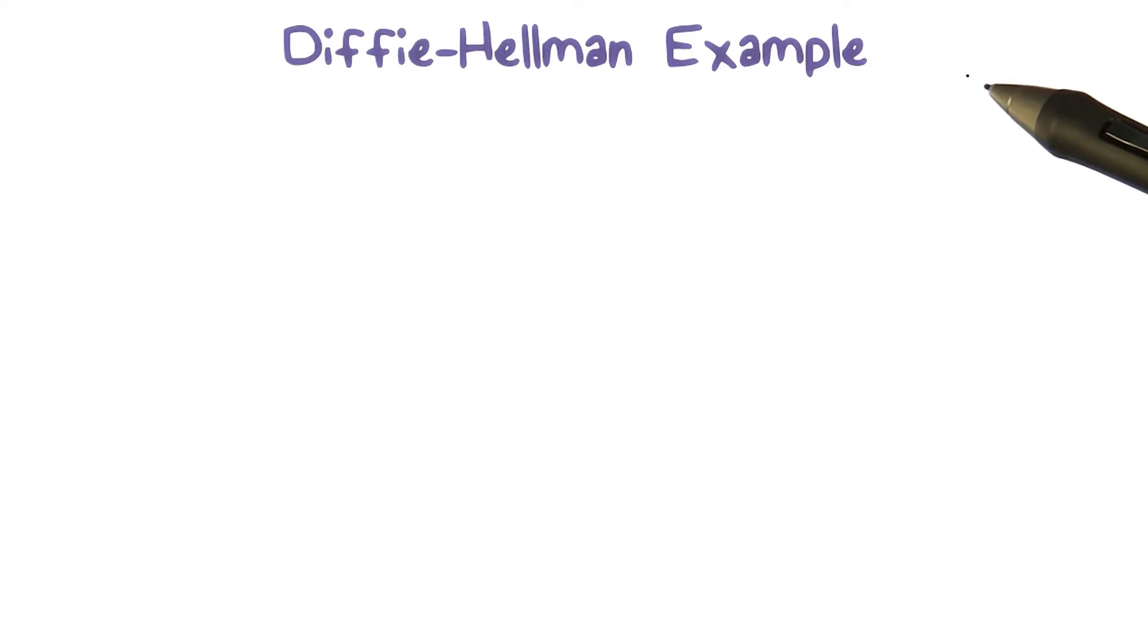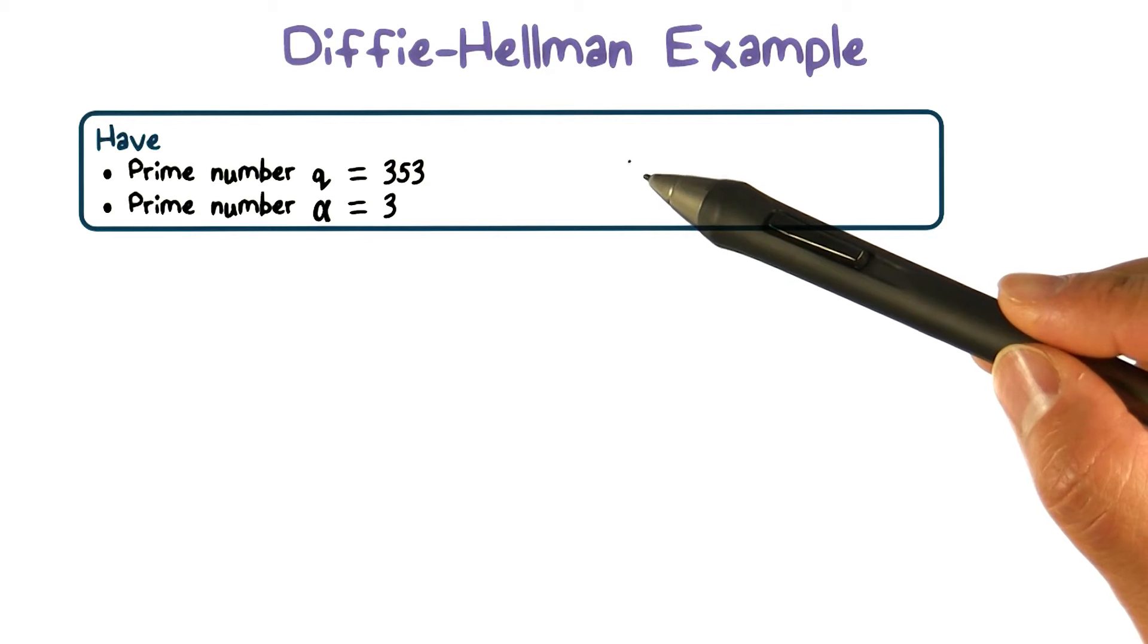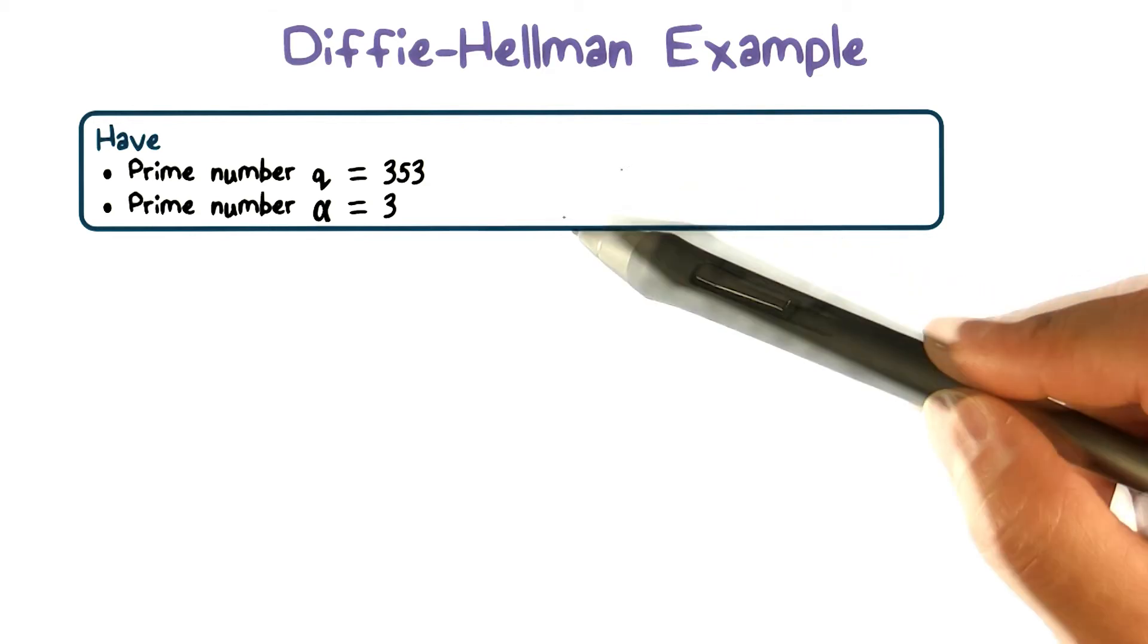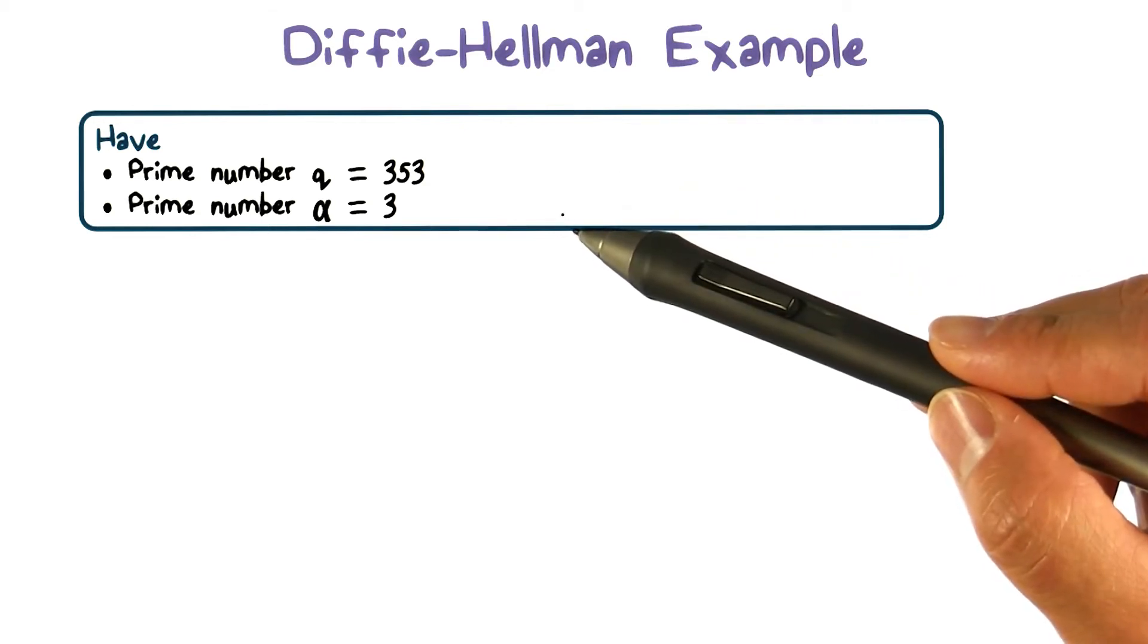Now let's illustrate Diffie-Hellman key exchange algorithm using an example. The prime number q is 353, and the alpha, which is the primitive root of q, is 3.